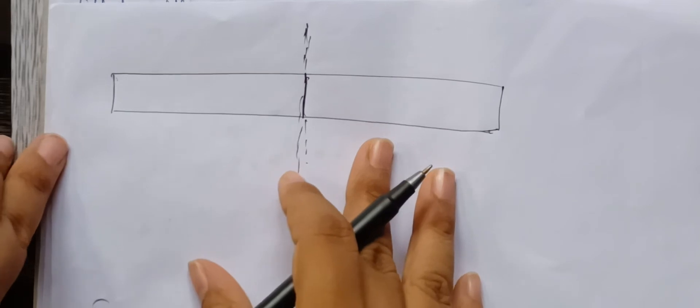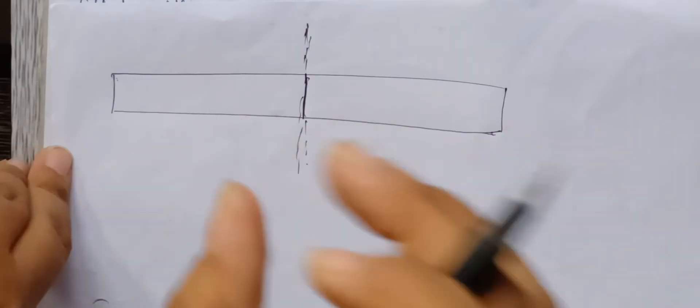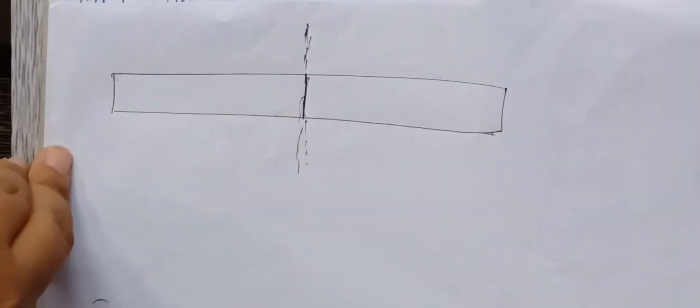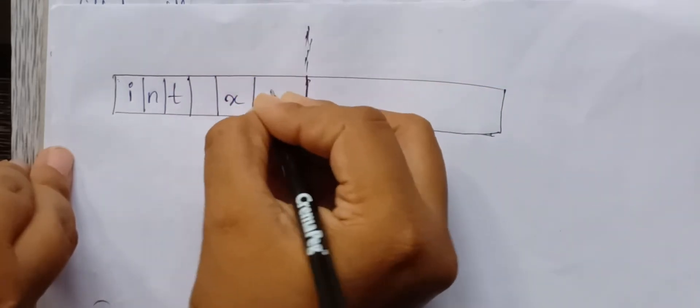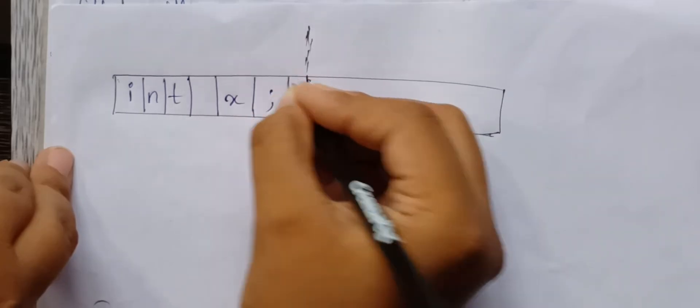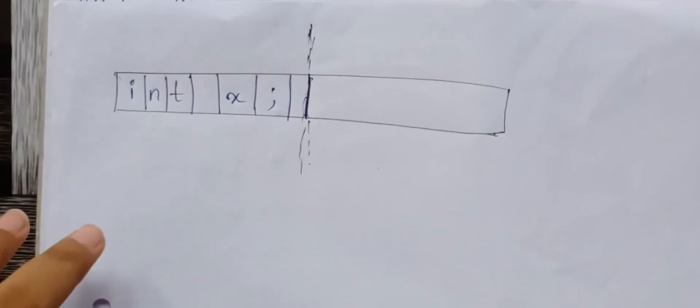I will show you a code example. The code is: int space x semicolon. So this is placed in the first half of the buffer.